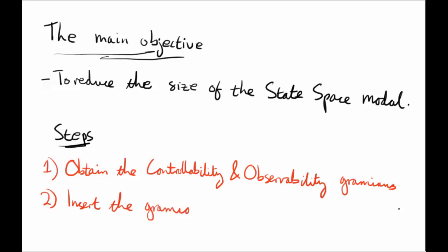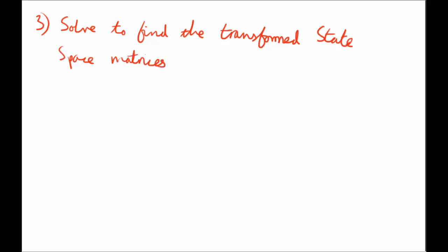Number two, insert those gramians into the Lyapunov equations. Number three, solve and find the transformed state space system, which is A hat, B hat, C hat and D hat, where these matrices are in terms of the previous state space system, the original A, B, C and D.